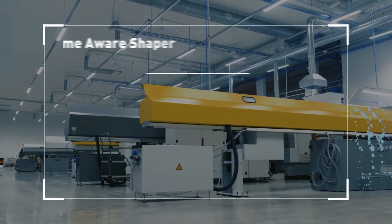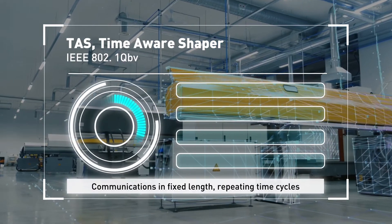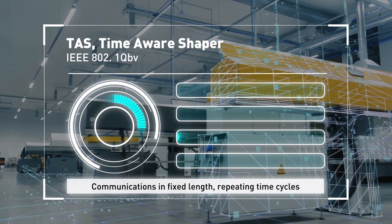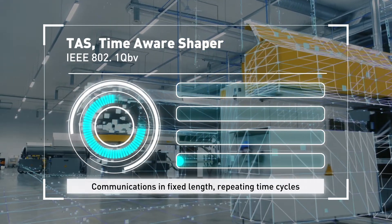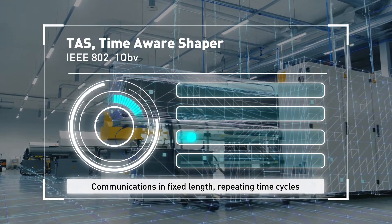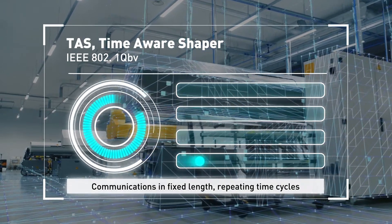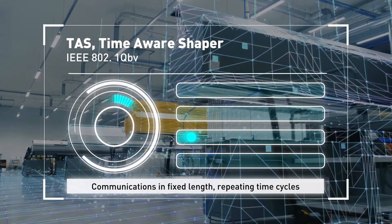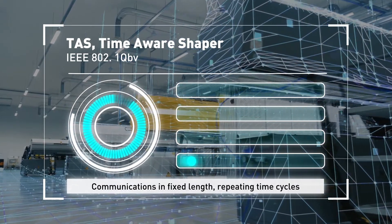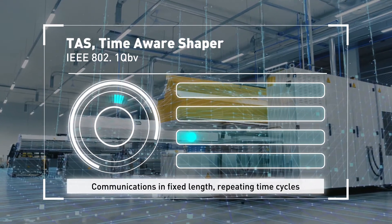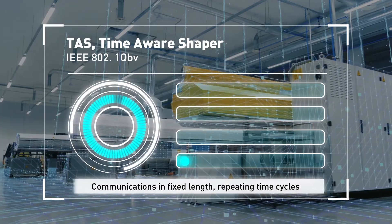Three: time-aware shaper. The time-aware shaper is designed to separate communication into fixed lengths and repeating time cycles. By doing this, it's possible to grant exclusive use to the Ethernet transmission for traffic classes requiring transmission guarantees that cannot be interrupted.